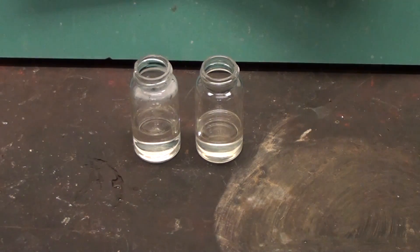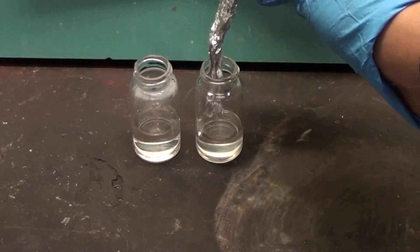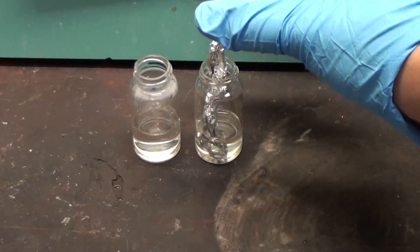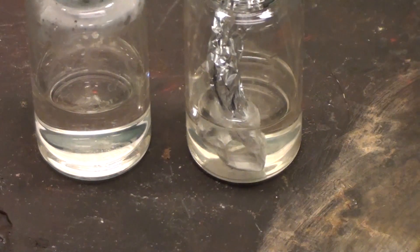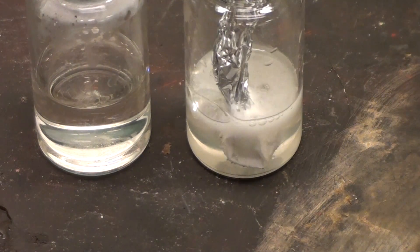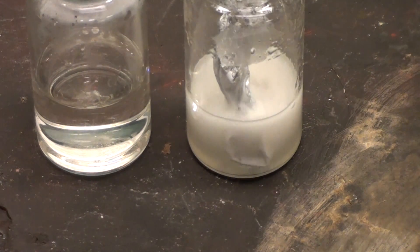Now I'm going to test the remaining sample with aluminum foil. Aluminum foil reacts with strongly concentrated sodium hydroxide to produce hydrogen and sodium aluminate. And there it goes. It looks like we have a decently strong solution of sodium hydroxide.